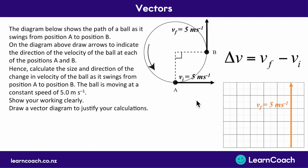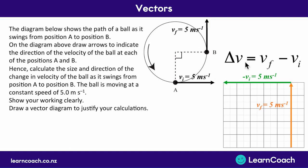We draw the final velocity arrow five squares long to represent the five meters per second. Then, following the formula, we need to do minus VI. VI is 5 m/s to the right, so minus VI is 5 m/s to the left — opposite direction because of the minus. We add that arrow, also five squares long, to the left. Now we have the final velocity minus the initial velocity drawn out head to tail. The change in velocity goes from the very, very start to the very, very end.